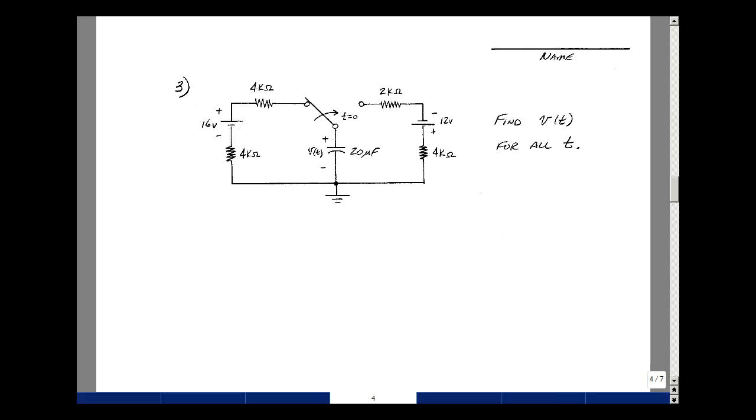For problem number 3, given this single-pole, double-throw switch, in this position for T less than or equal to zero, and then flips to this position at T equals zero, can you find the voltage across the capacitor for all time?